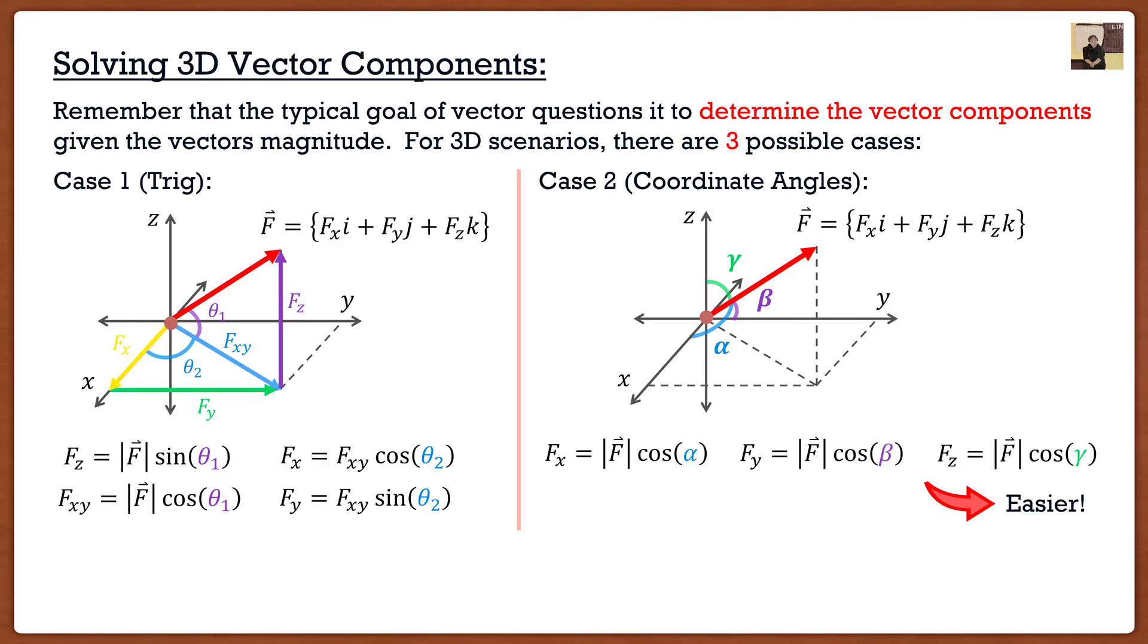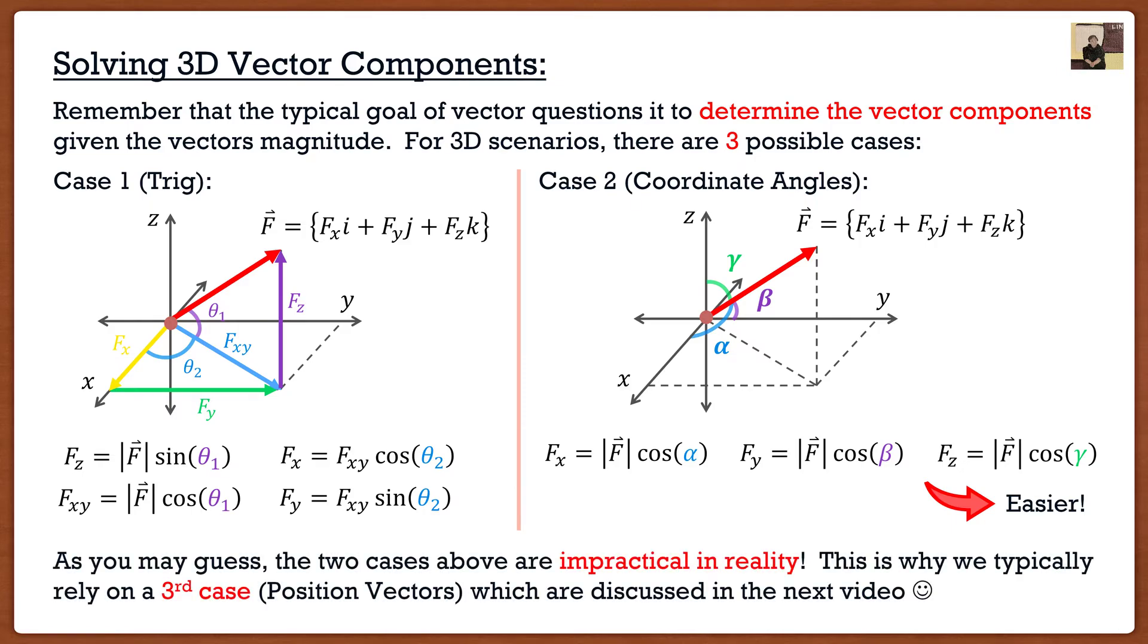Now you guys are saying Clayton you idiot, you have a typo, you said there's three cases but you just showed us two. Well there actually is a third case but it's not going to be in this video because the third case is much more different than these first two cases and it uses something called position vectors which are going to be extremely important moving forward. The reason I'm not discussing it in this video is because it's not like the first two cases. The first two cases involve trigonometry. Every single calculation here is cosine or sine of an angle.